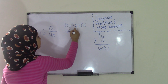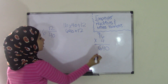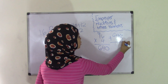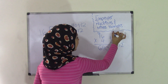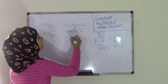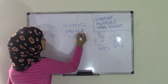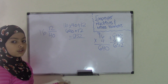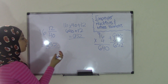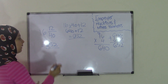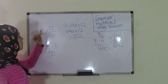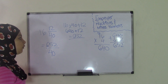Now we have 640 plus 12. 0 plus 2 is 2, 4 plus 1 is 5, and 6 comes down as it is, so we get 652 as our sum. 652 becomes your numerator, and the denominator stays the same, which is 40. So the improper fraction for 16 and 12 fortieths is 652 over 40.